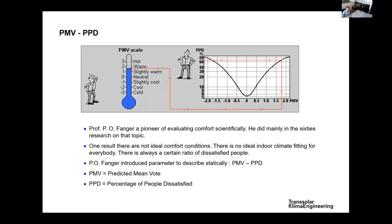Professor Fanger was a pioneer in this field. He developed the body comfort equation and then wanted to represent it statistically. If the thermal condition in a workplace is not perfect, how far from perfect is it? Or within what limits should we maintain temperature, humidity, and other parameters to enable reasonable thermal comfort?